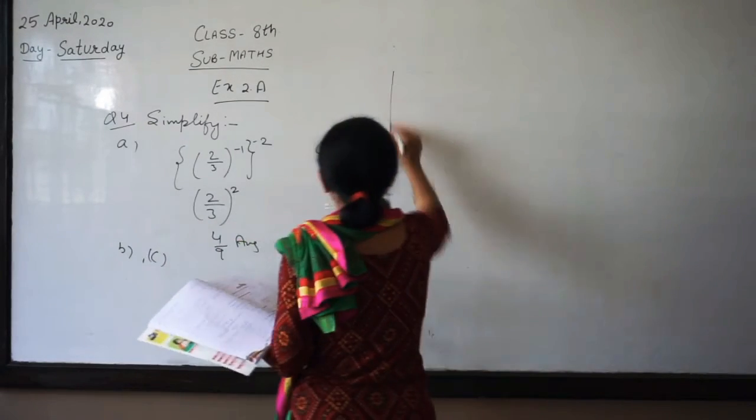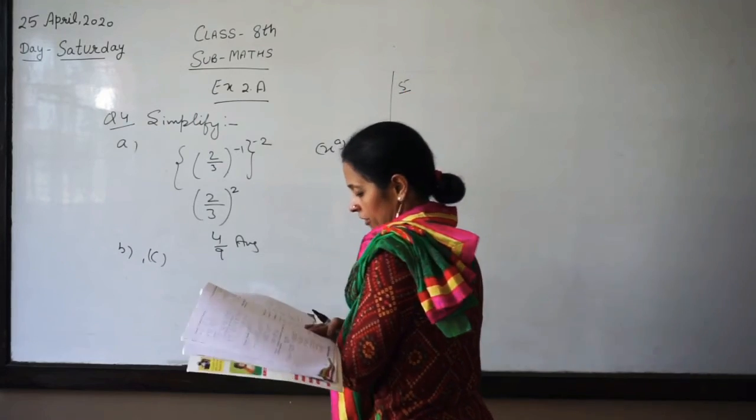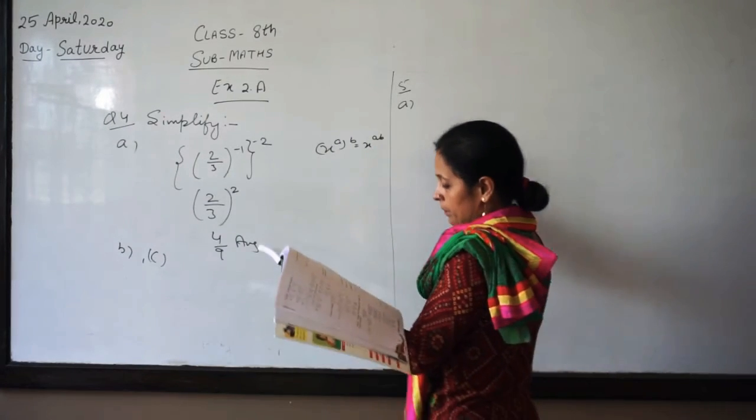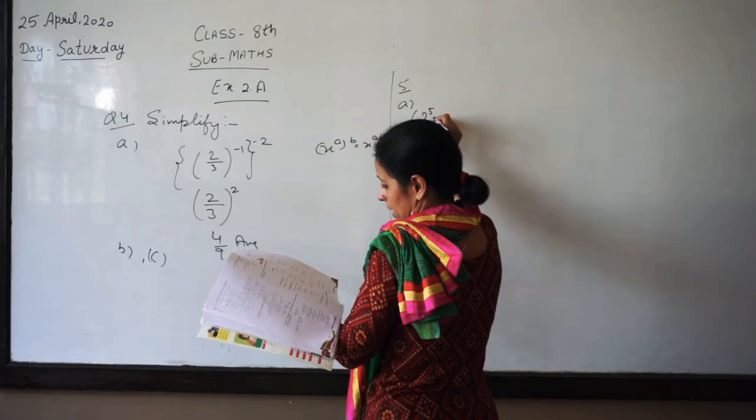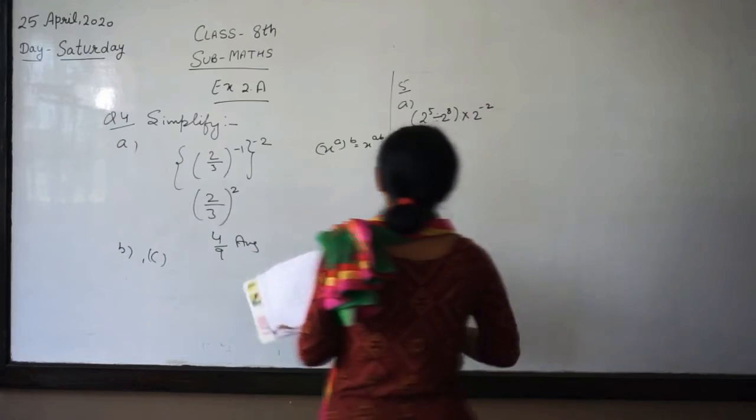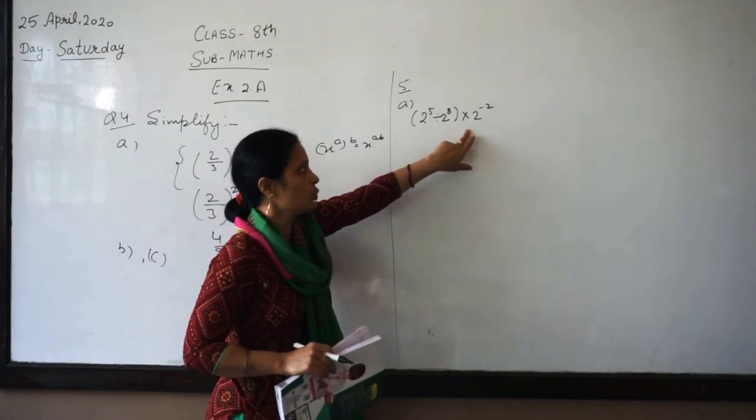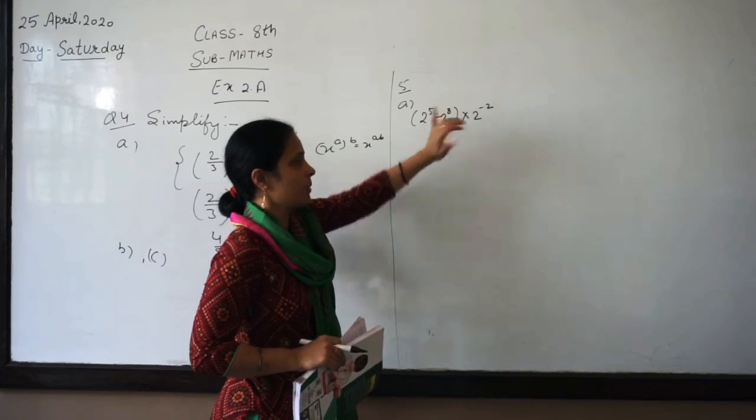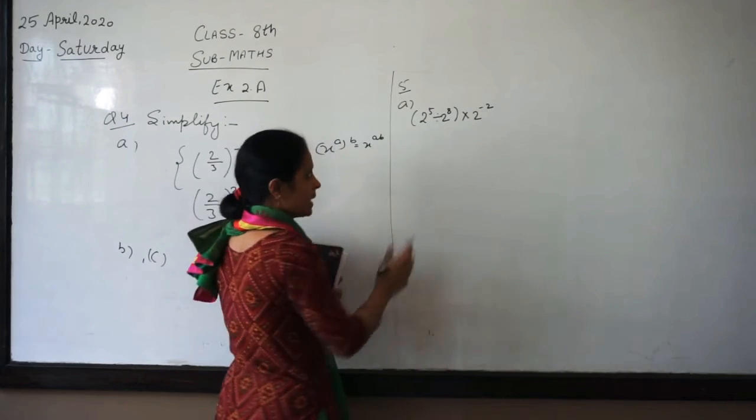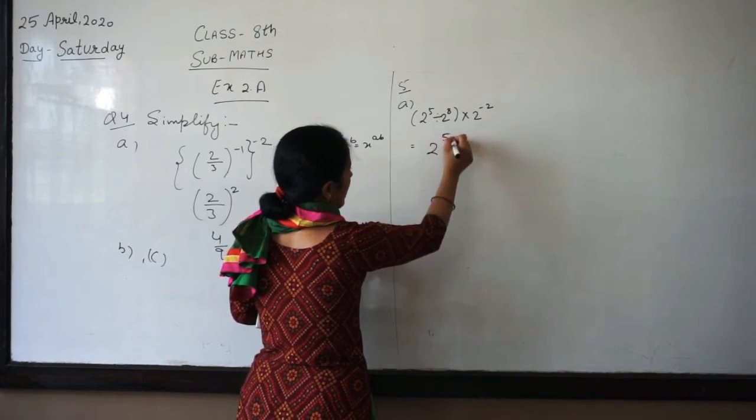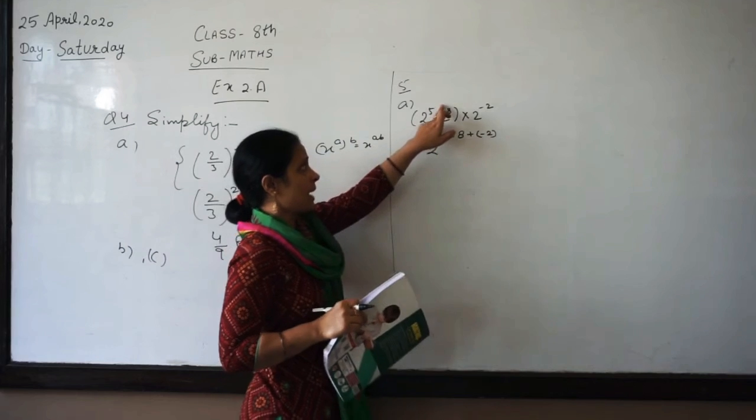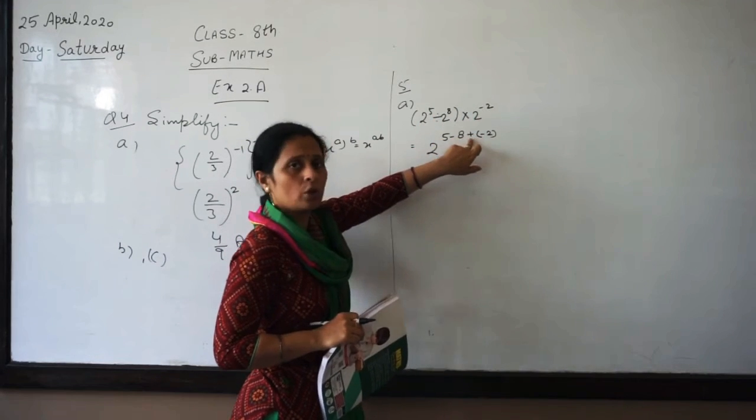Now the next step is Question No. 5, Question No. 5. You can verify, I will show you a little bit. First step, 5 to the -5 divided by 5 to the -8. And you can see 5 to the -2.